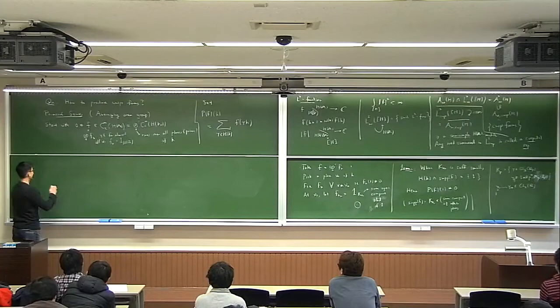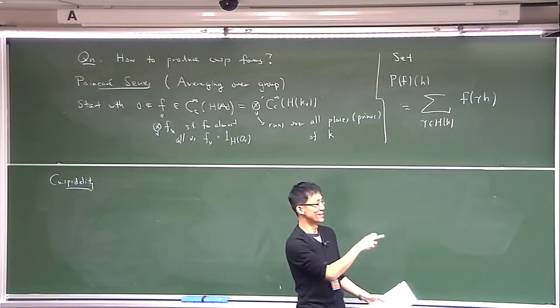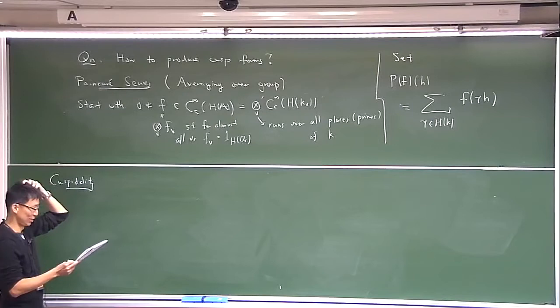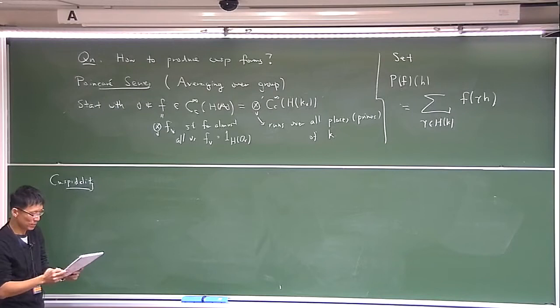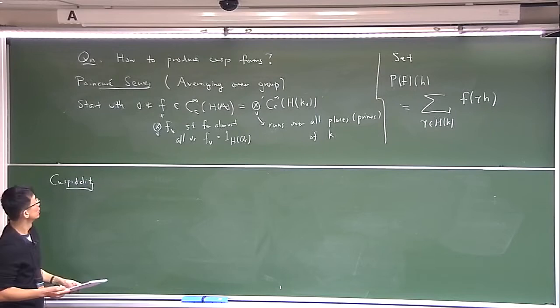I want to discuss a separate question — the question of cuspidality. So far the discussion is about showing non-vanishing. Now how do you show that this Poincaré series is cuspidal? It's not immediately clear, for no good reason, why it should be cuspidal. So the question is: what condition can you put on your input function to ensure that the output PF is cuspidal? Here is one way, which is just a local condition.